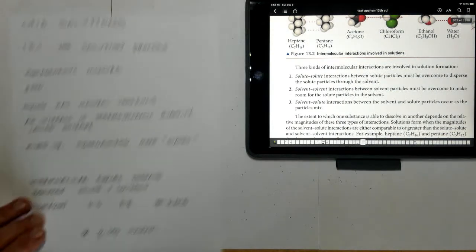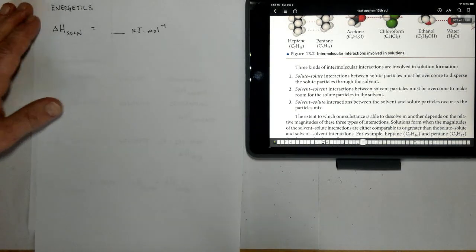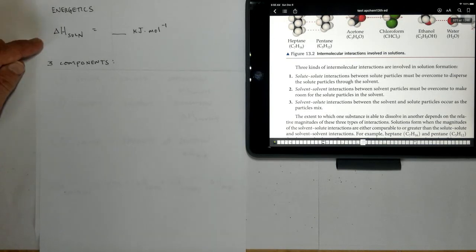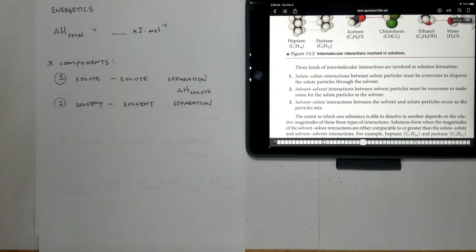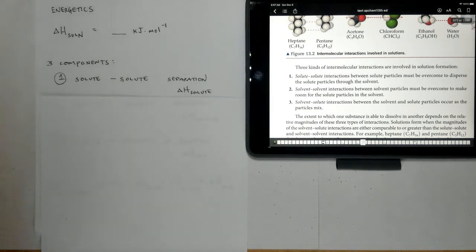Well, there are three kinds of intermolecular interactions that are involved in solution formation. And these interactions are listed on the notes right here that end up giving us the energetics or the energy that's associated with forming of a solution. So component number one is that the solute-solute interactions have to be broken. So they have to separate from one another. So think of it as our salt and water example. You have to take the water molecules and separate those apart.